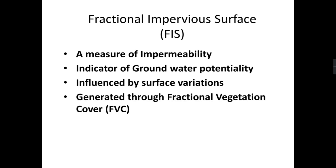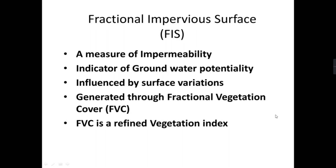We can estimate the fractional impervious surface using another variable. First we need to generate the fraction vegetation cover (FVC). When it comes to FVC, it is a well-defined vegetation index used to measure the overall density of greenness in an area. It is refined because it is devoid of the influences posed by different illumination conditions, as compared to other indices like NDVI or SAVI. By using FVC, we will compute our final product — the fraction impervious surface.